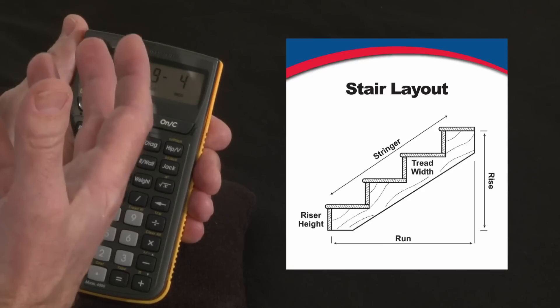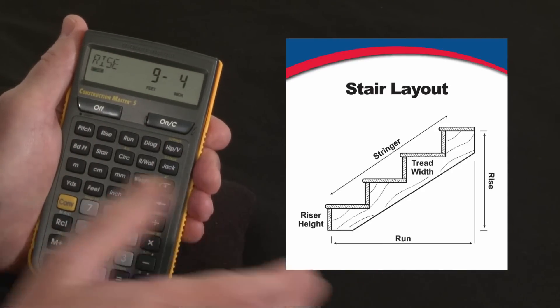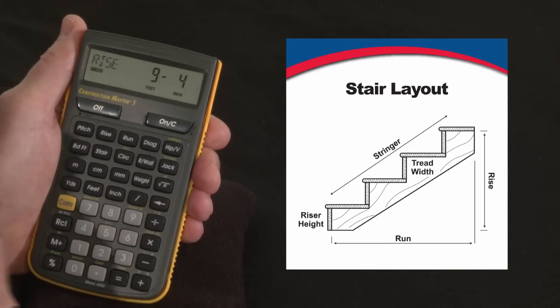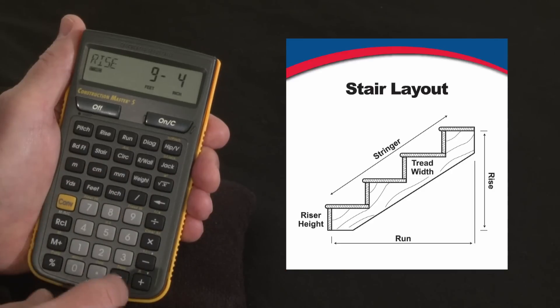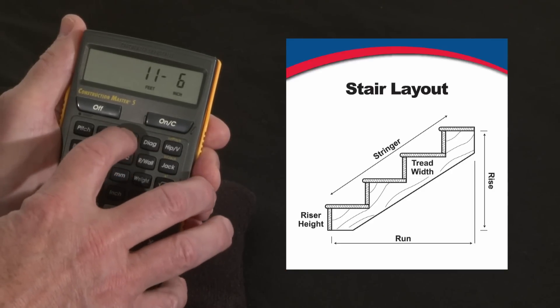Now let's say, let's do this one again and say we've got a constraint. Maybe we're building these stairs into a basement and you've calculated all you've got available is eleven foot six horizontally to work with. So let's put in eleven feet six inches and call that our run.